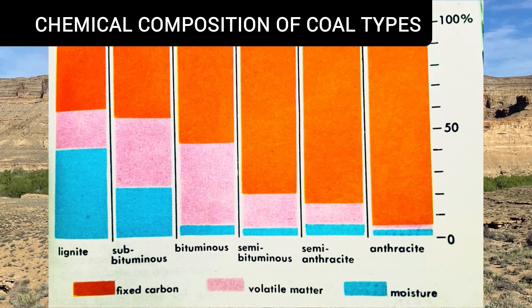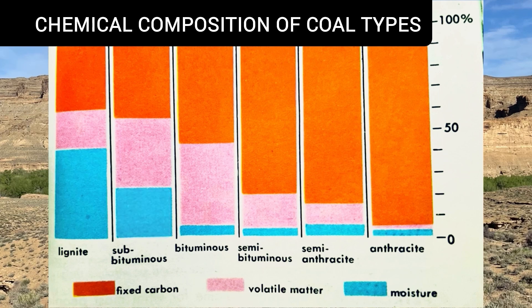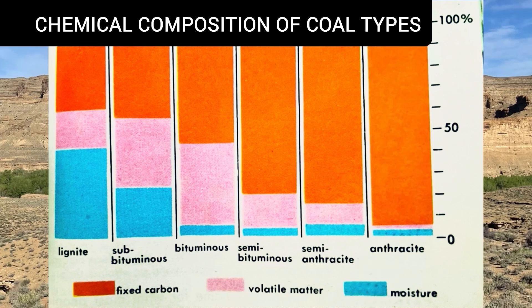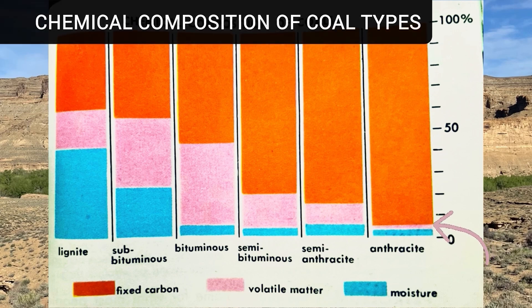The differences in these grades of coal are best seen in a graph showing their chemical composition. Lignite has a higher amount of moisture, but as we move through bituminous and anthracite grades, moisture decreases while fixed carbon gets higher. Volatile matter is also less and less as we move from lignite to bituminous, and when we get to anthracite, both volatile matter and moisture are extremely low.